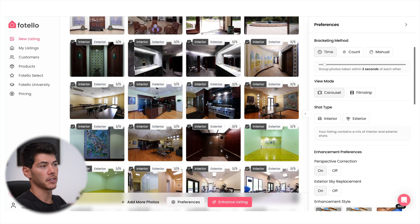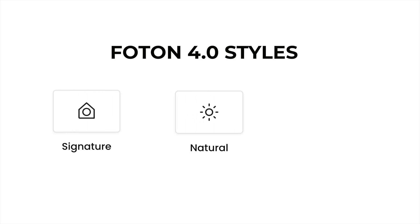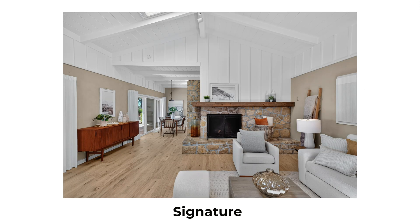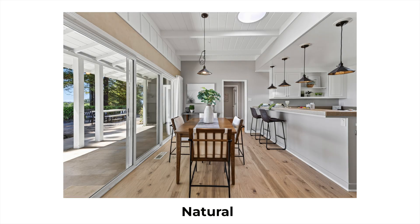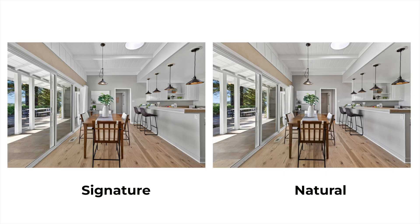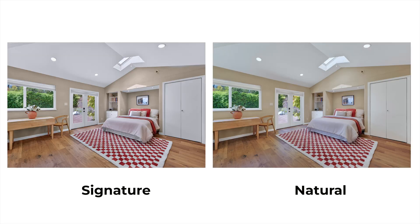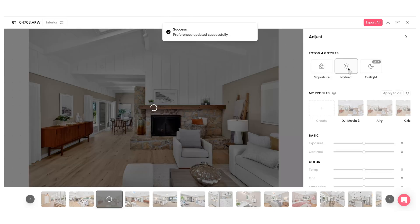Once we've set interior and exterior selections, I always turn on auto perspective correction and sky replacement. Next, we have the option to select from three different editing styles. Signature gives a more polished look with fully desaturated walls, while natural still cleans up the color casts but gives a more realistic feel. I usually lean towards natural, but try them both for yourself because you can easily change back and forth with just a click.